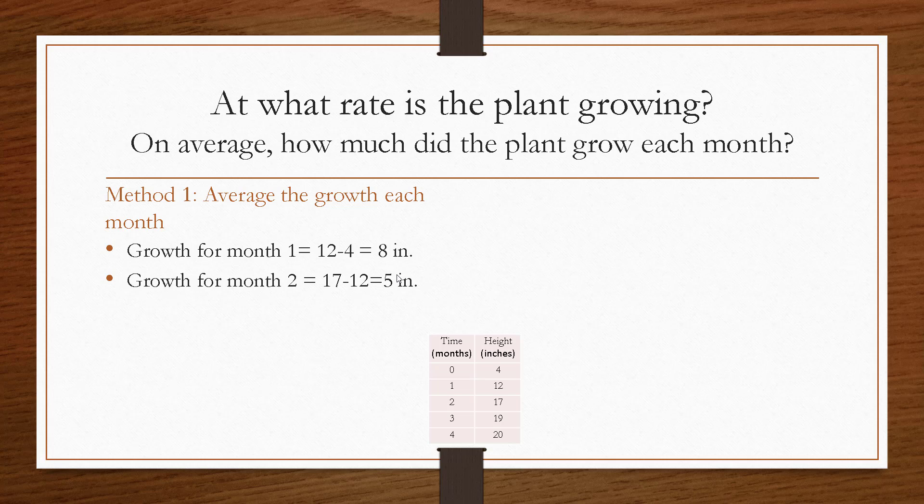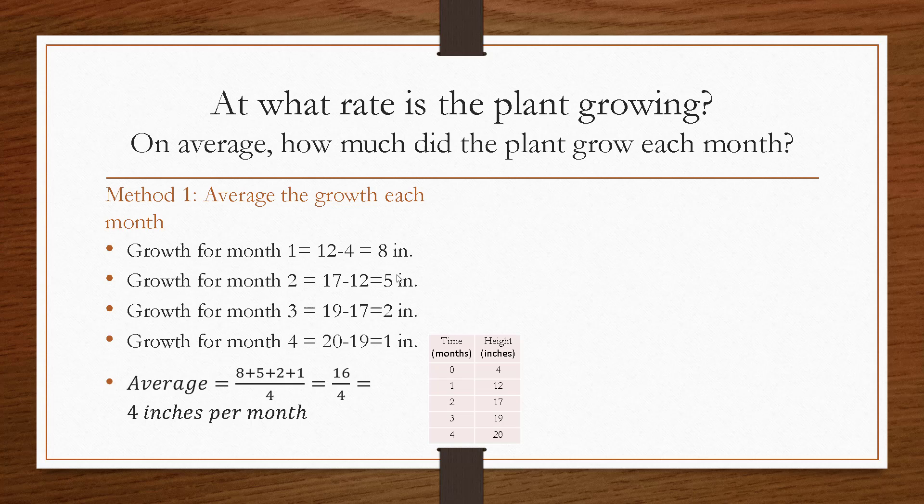Similarly the next month it grew 5 inches, then 2 inches, and then finally 1 inch. If we average those numbers we just add them all up, then divide by 4, and we get that it grew an average of 4 inches per month.